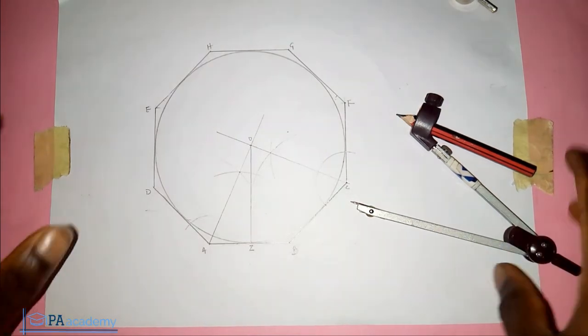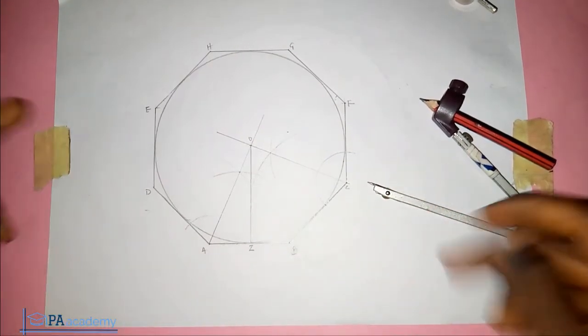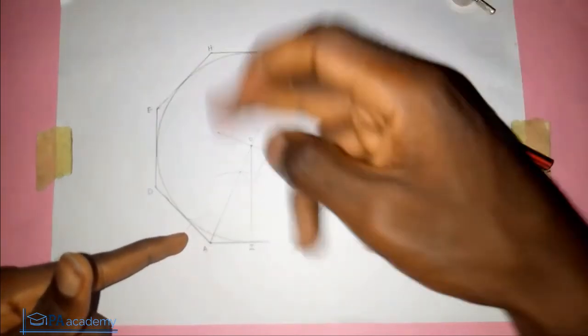So this is it, guys. Just follow the same principle. Pick any two angles, bisect them, get your center, and that will represent the radius.